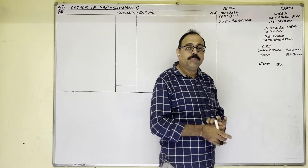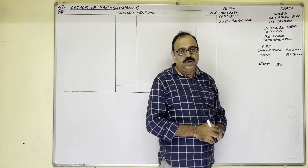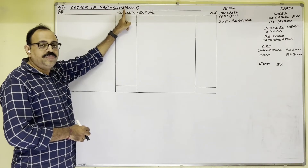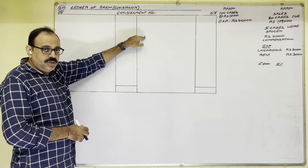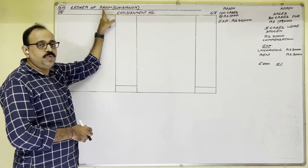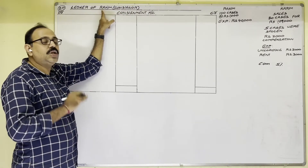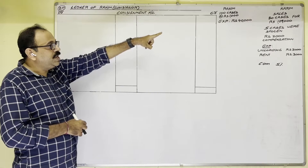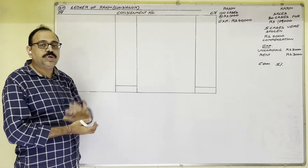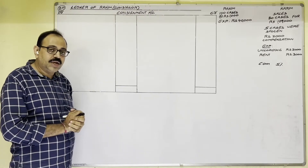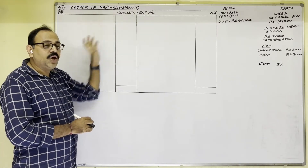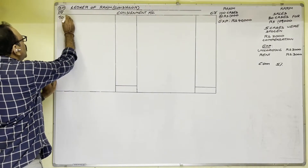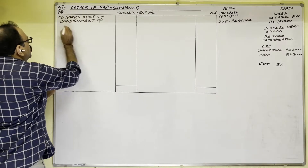He is asking us to prepare the consignment account in the books of the consignor. The heading is 'Ledger of Raheem — Consignment Account.' Since we are preparing the ledger in the consignor's books, we analyze all transactions from the consignor's point of view. First, the consignor sent 100 cases of medicines at ₹1,000 each. The journal entry is: Consignment Account debit, to Goods Sent on Consignment Account. So on the debit side of the consignment account, we post goods sent on consignment.